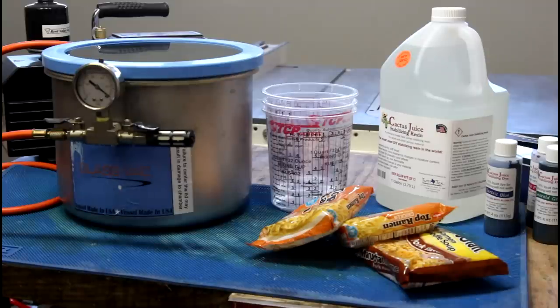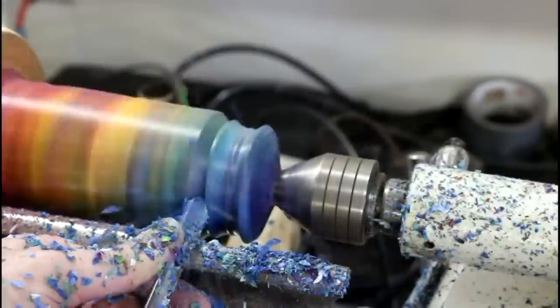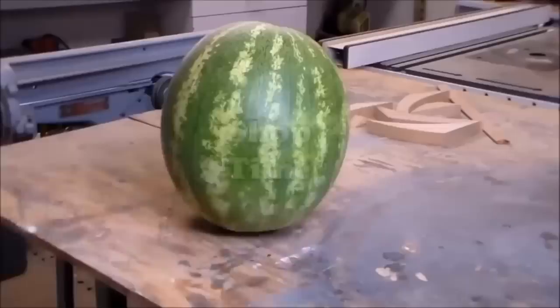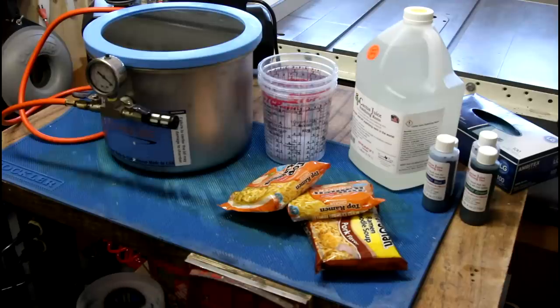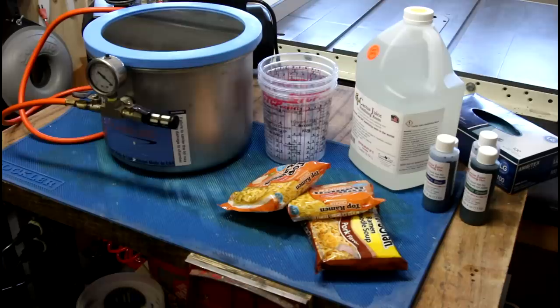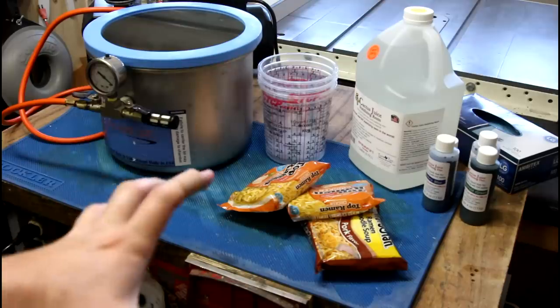Today we're going to try something you guys have been asking me to do for a while. Dyeing and dipping ramen noodles. We know they can be put in resin. I watched a video where the guy made a guitar out of them. But that's not what you asked me to do. You asked me to dye them.